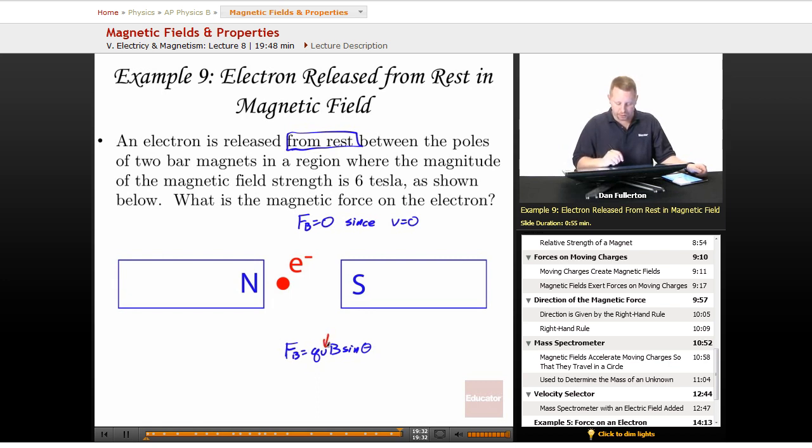If V equals zero, then that whole thing is zero. No magnetic force. So our answer? Zero.